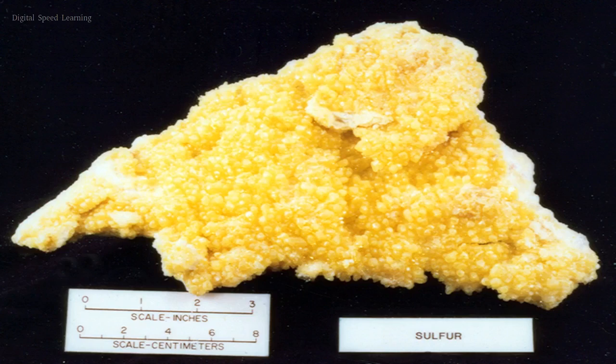The element sulfur is used in matches, insecticides, and fungicides. Many sulfur compounds are odoriferous, and the smells of odorized natural gas, skunk scent, grapefruit, and garlic are due to organosulfur compounds.